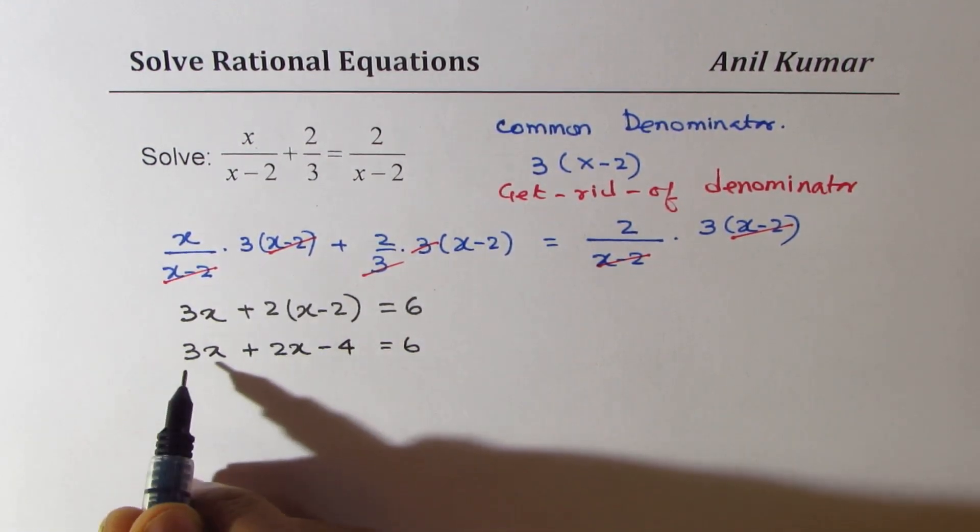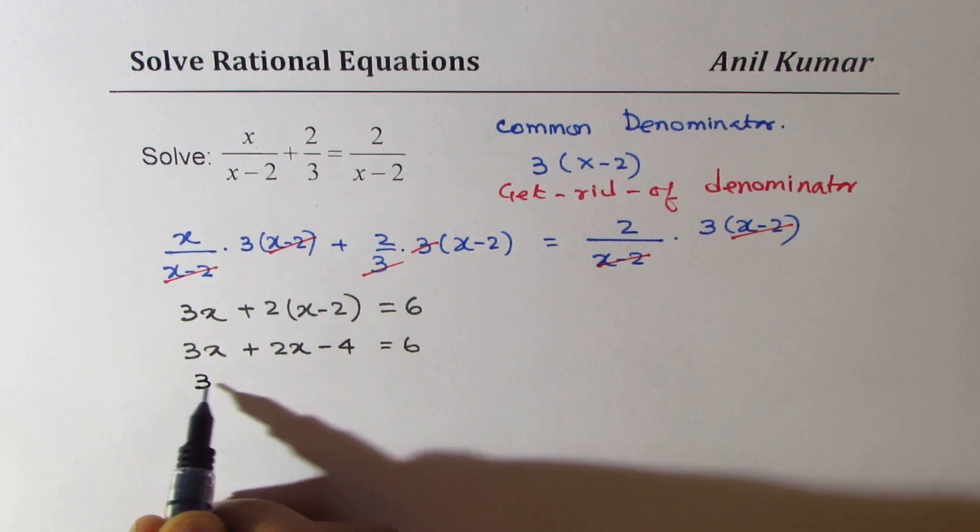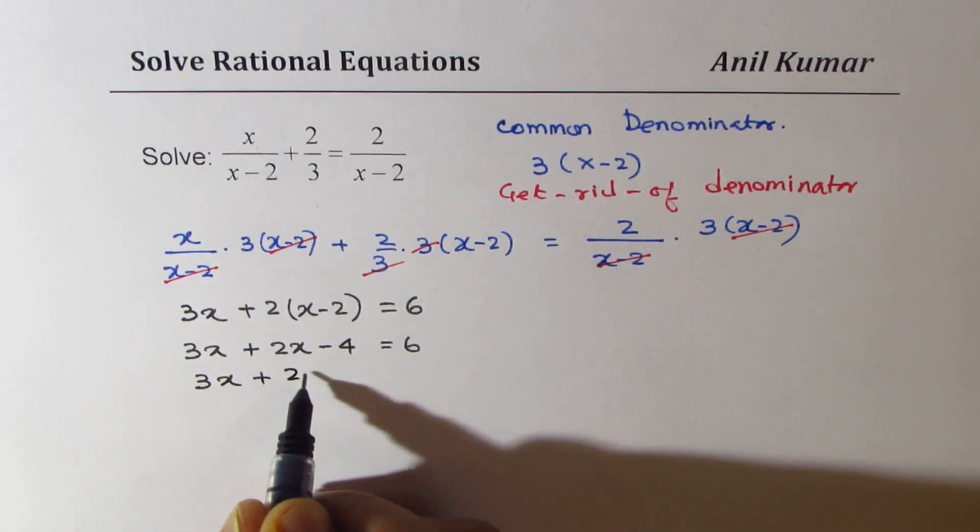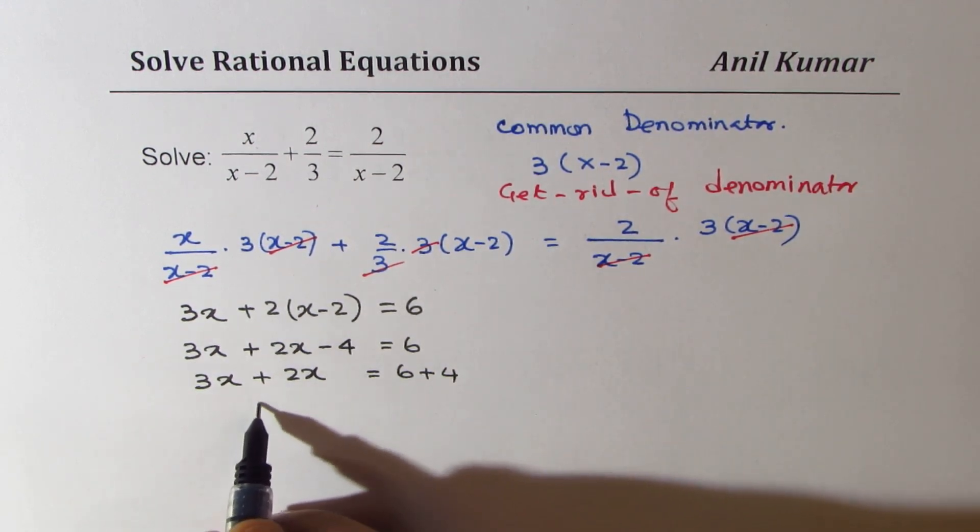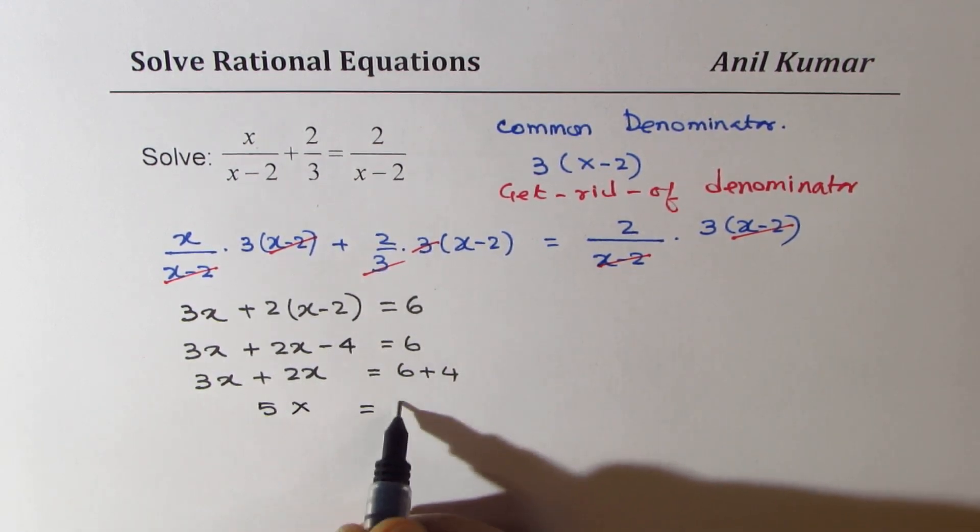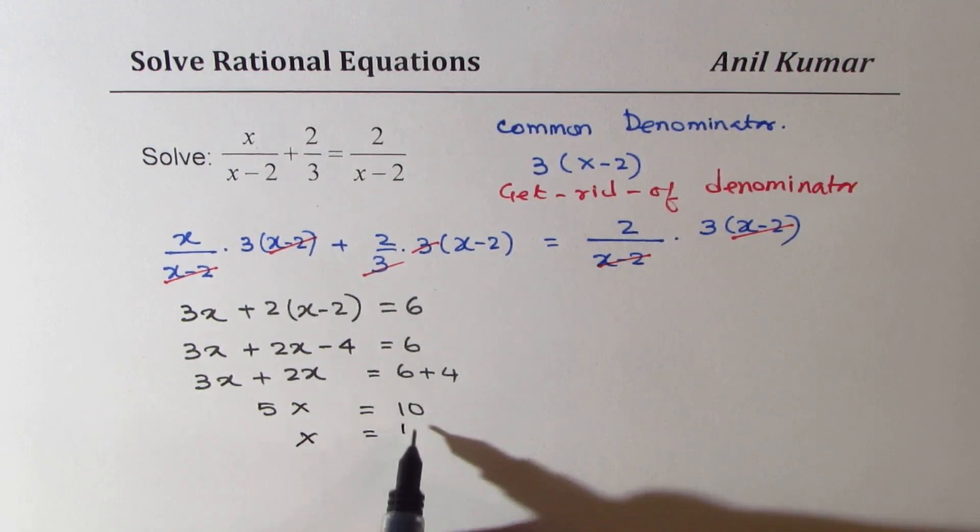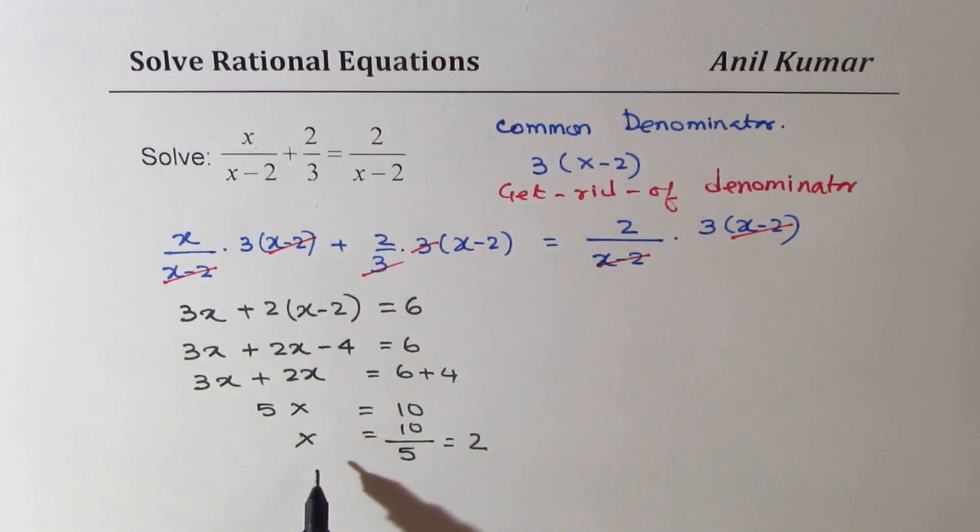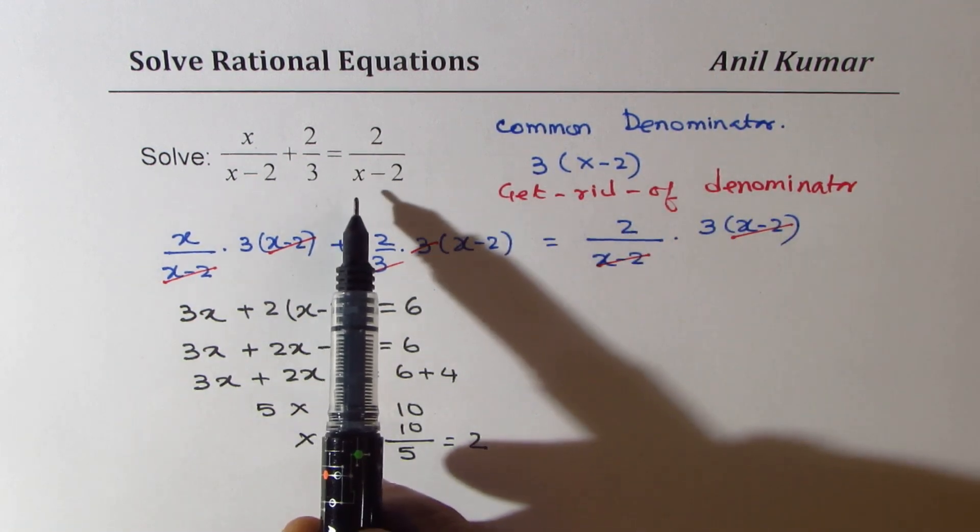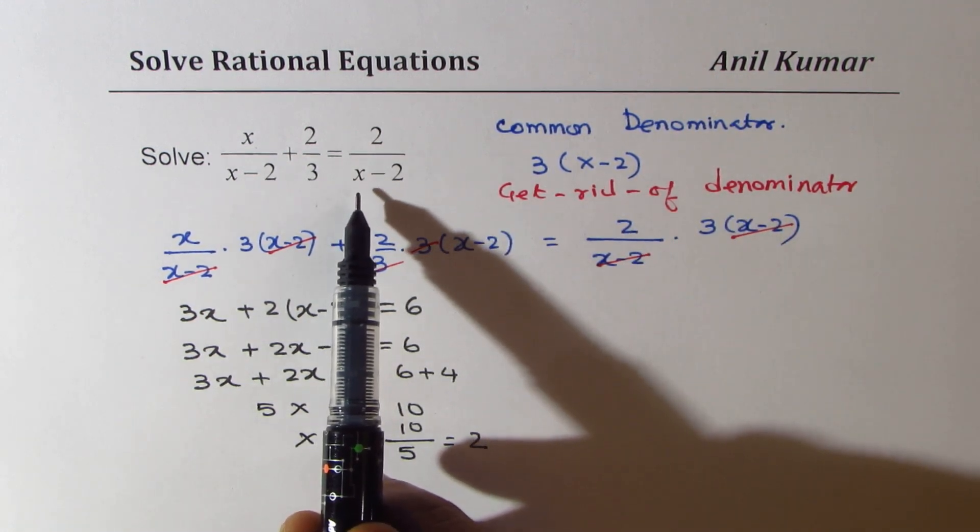Taking 4 to that side, 3x plus 2x, let me rewrite, equals to 6 plus 4. So that gives you 5x equals to 10 or x is equals to 10 over 5, which is 2. Now, in this particular case, we get x equals to 10 over 5, which is 2. You will note that we cannot really get 2 as our answer.